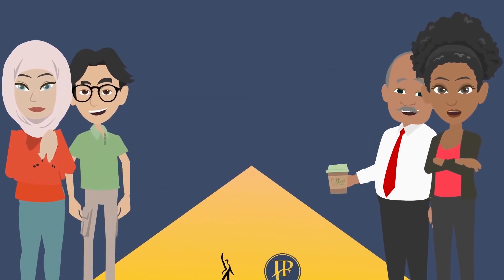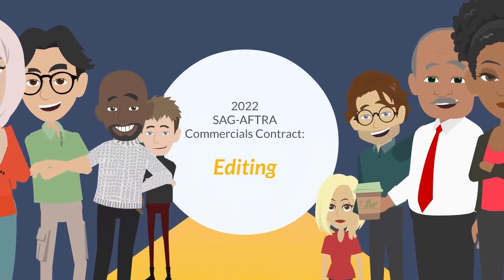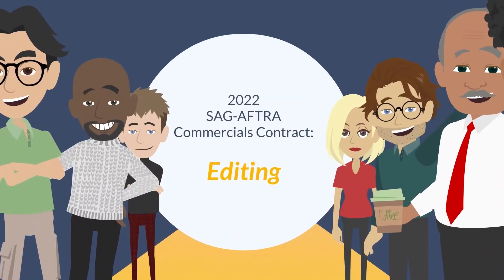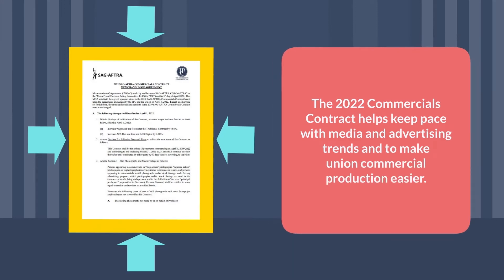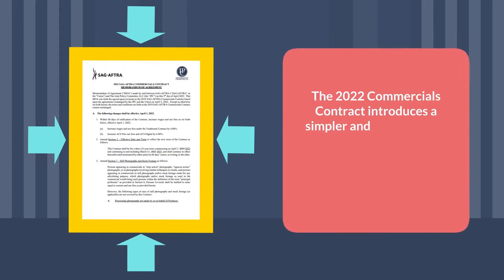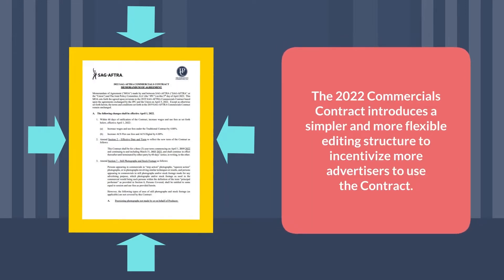An Introduction to How Editing Works under the 2022 SAG-AFTRA Commercials Contract. The contract was modernized in partnership between SAG-AFTRA and the Joint Policy Committee to help keep pace with trends in the media and advertising industries and to make union commercial production easier. The 2022 Commercials Contract introduces a simpler and more flexible editing structure for all commercials produced under this contract, which will help to incentivize more advertisers to use this contract.